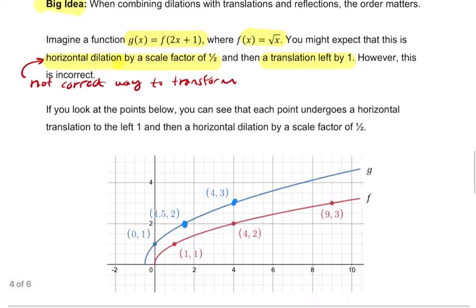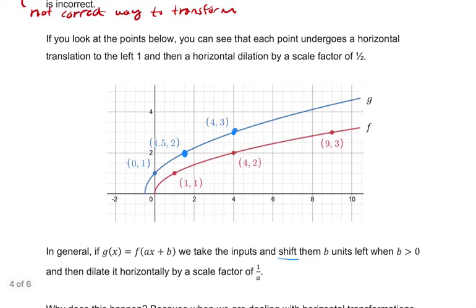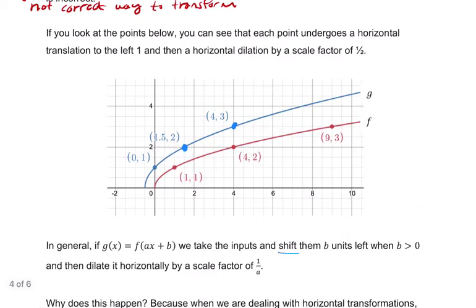What is the correct way? Well, if we look at it, the only other thing we can try is to do the opposite. Instead of dilating first and then translating, we can translate and then dilate. So let's do it the wrong way first and then we'll do it the right way. Let's use 4, 2 as a point. If we dilate first by a scale factor of a half, we would get to 2 here. And then we would translate left by 1 to go here, which is clearly not the point we need.